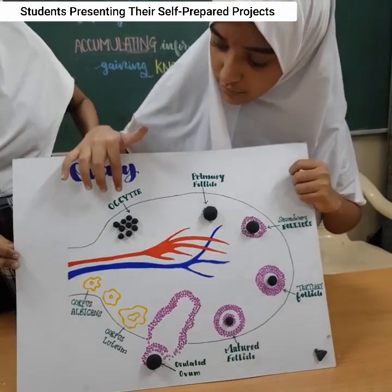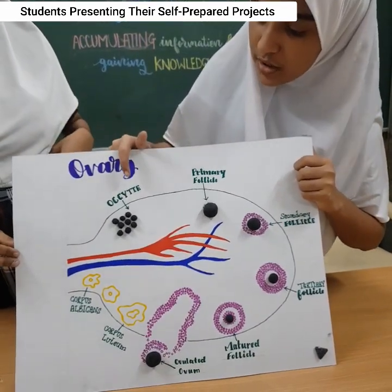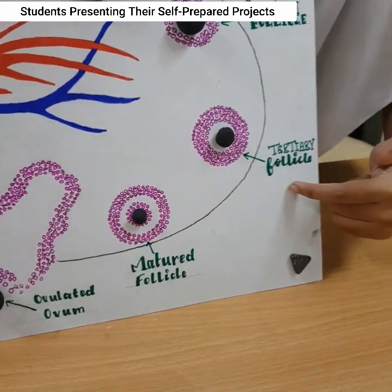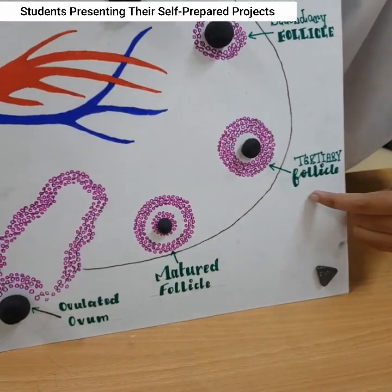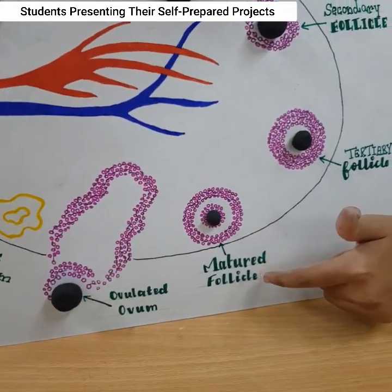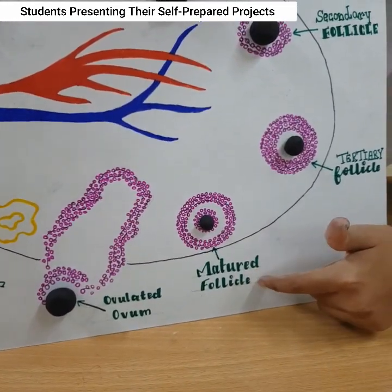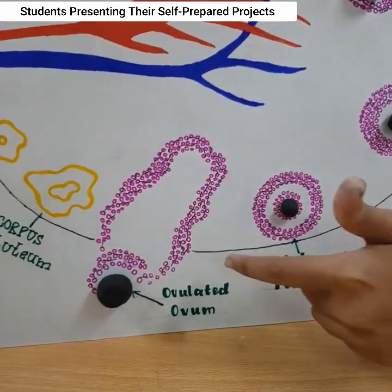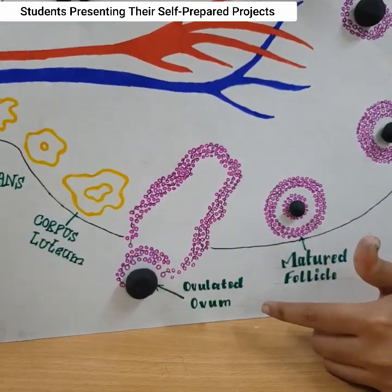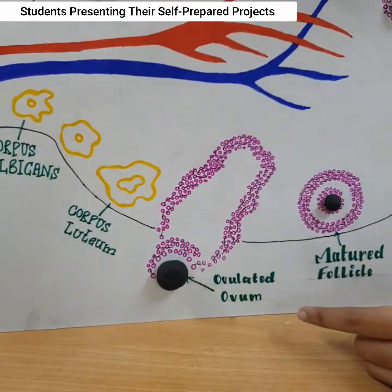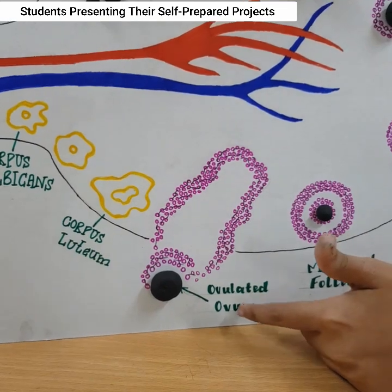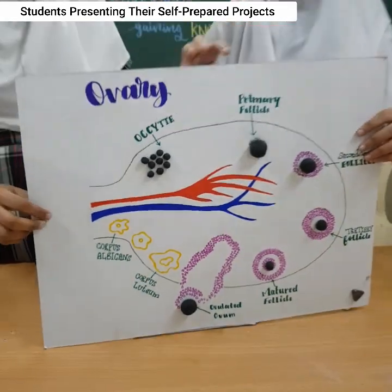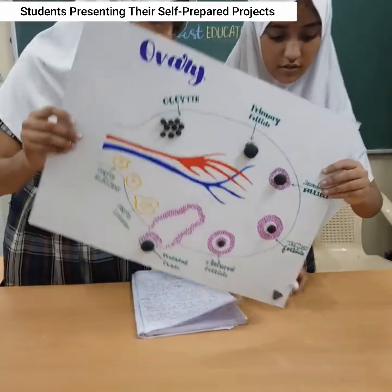Millions of oocytes are present in the ovary. A secondary follicle then develops into a tertiary follicle and it becomes mature. When the follicle becomes mature, the wall of the ovary gets ruptured and the ovulated ovum is released. This is called ovulation.